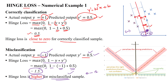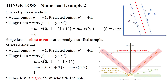In another example, the actual output is positive 1 and it is also predicted as positive 1, so the data is perfectly classified in the positive sample region. Substituting into the hinge loss formula: maximum of 0 and 1 minus (1 times 1) = maximum of 0 and 0 = 0. The loss is 0, confirming the sample is correctly classified.